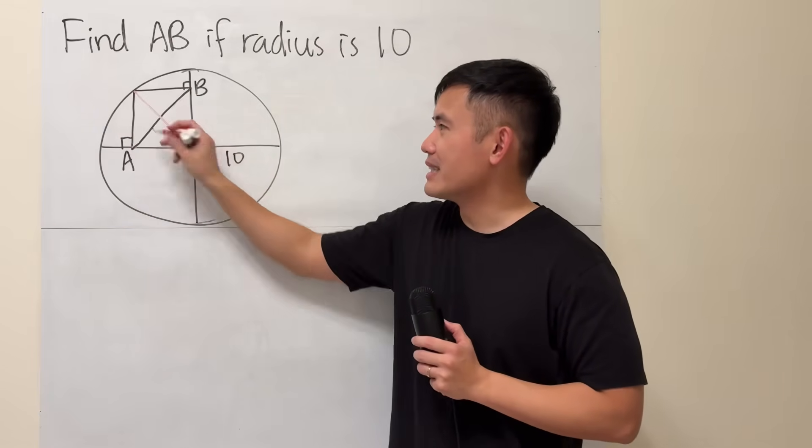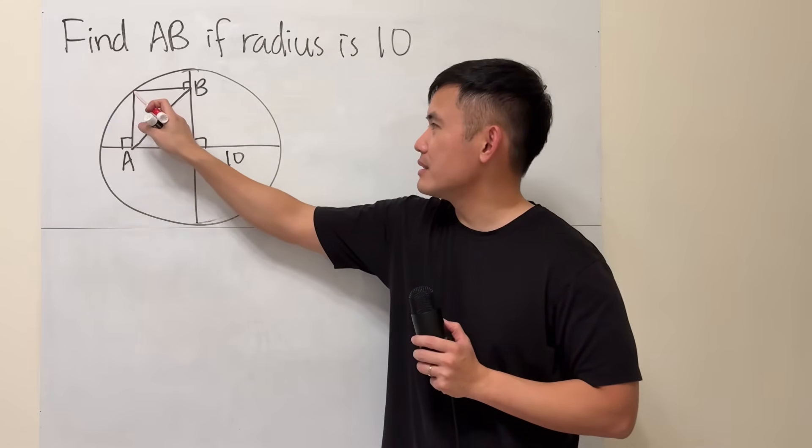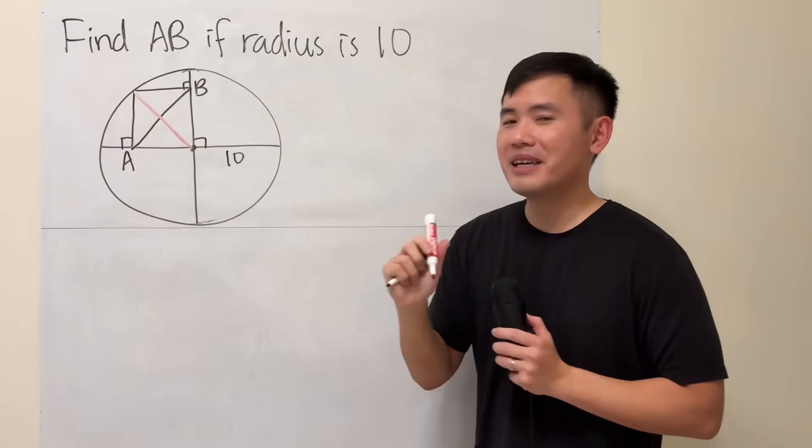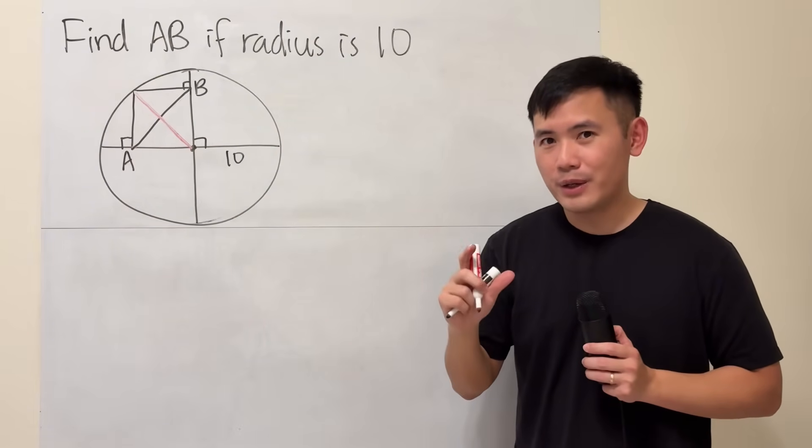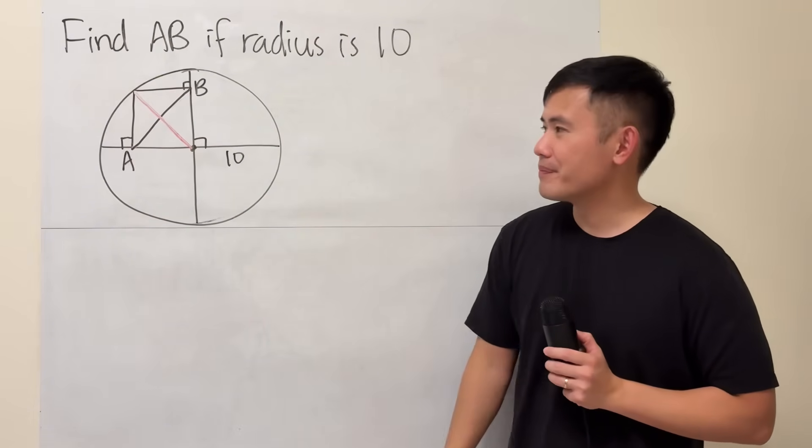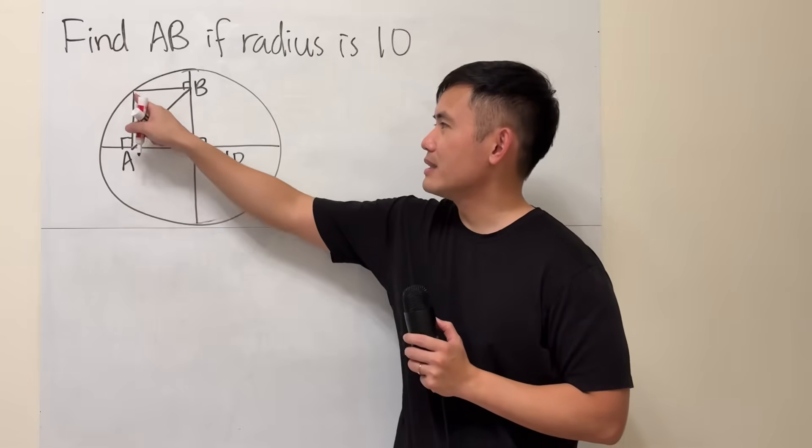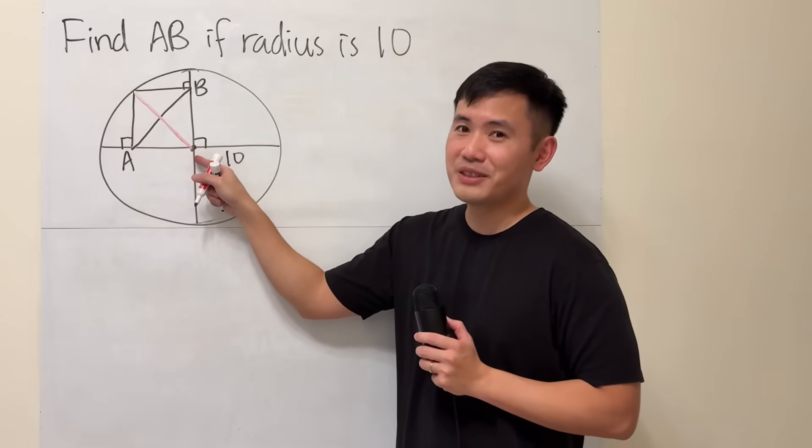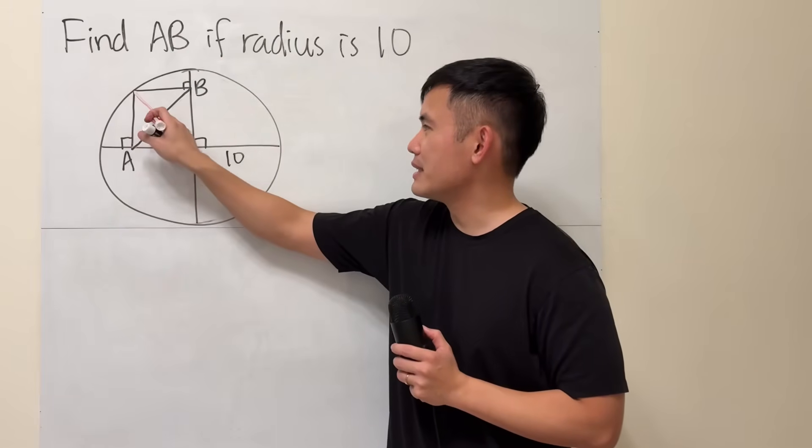This is the same as that. Because the diagonals, not diameters, because the diagonals of a rectangle are equal. So this is equal to that. And guess what's this? That's just the radius of the circle. So that's equal to 10.